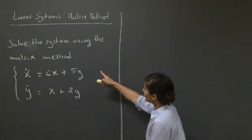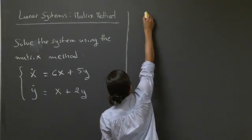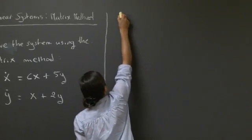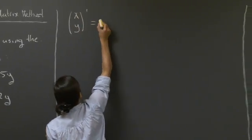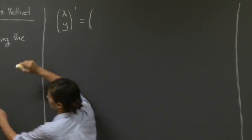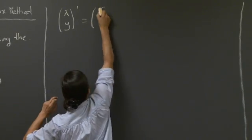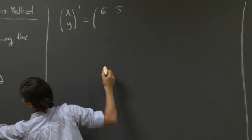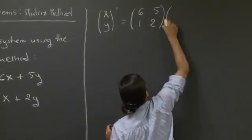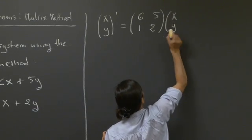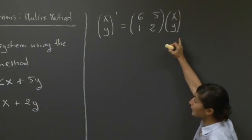Welcome back. So let's write down this system in matrix form. We would have a vector with entries x and y prime equals a matrix with entries 6, 5, 1, 2 multiplying the column vector x, y.